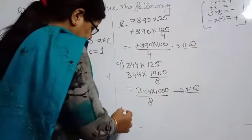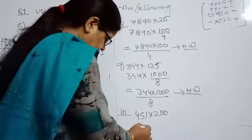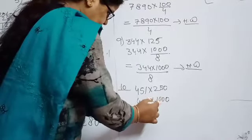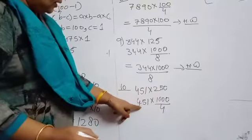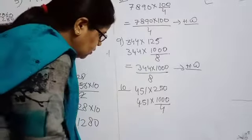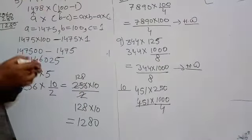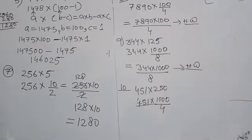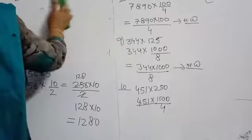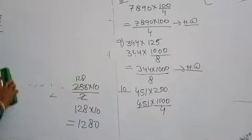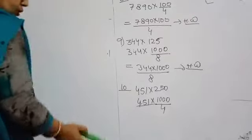Question number 10: 451 multiplied by 250. How will you do this? You write 250 as 1000 upon 4, because if you divide 1000 by 4, you get 250. So it becomes 451 multiplied by 1000 divided by 4. Again, you will divide 451 by 4 and then do the multiplication. Complete all these questions in this way. I am also going to give you some extra addition and subtraction practice questions so you can do personal practice, since questions 1 through 4 from the book are already done.